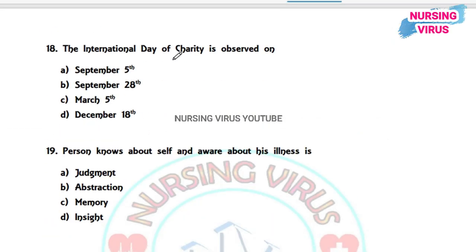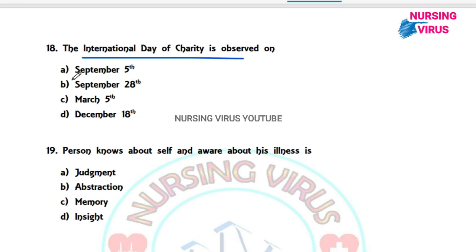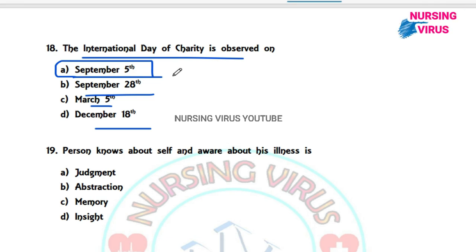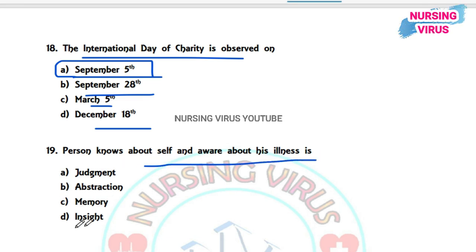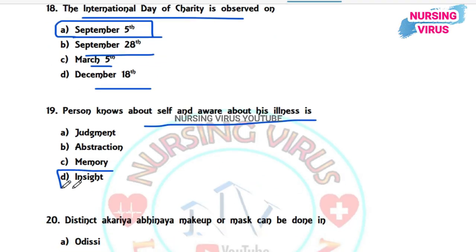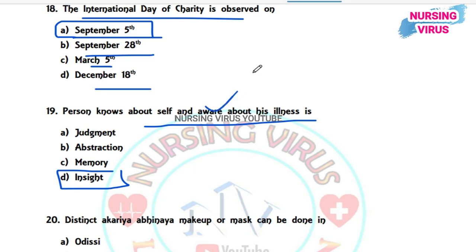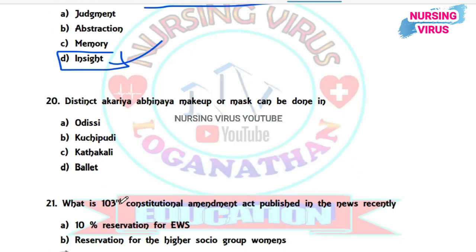Question 18: The International Day of Charity is observed on which date? The options are September 5, September 28, March 5, and December 18. The correct answer is September 5. Question 19 (Psychiatric): A person who is aware of their own illness is considered to have what? The options are judgment, abstraction, memory, and insight. The correct answer is insight — when a person recognizes their own illness, such as acknowledging their fear or depression themselves, that is called insight.